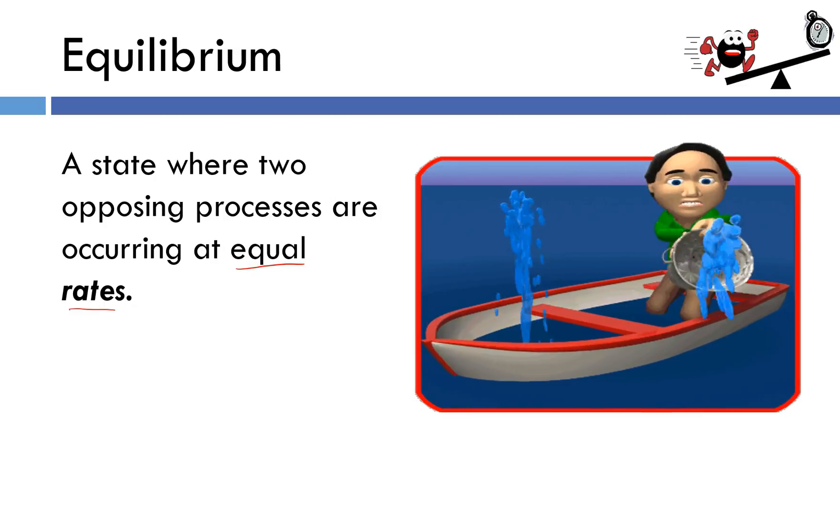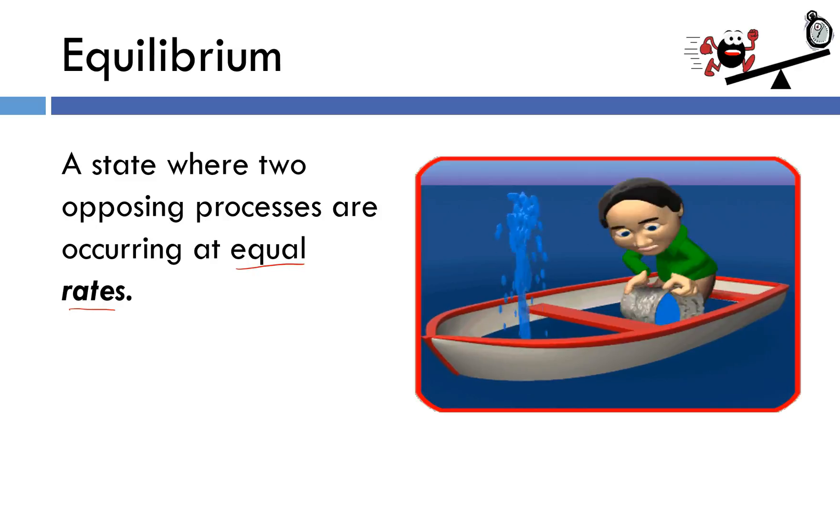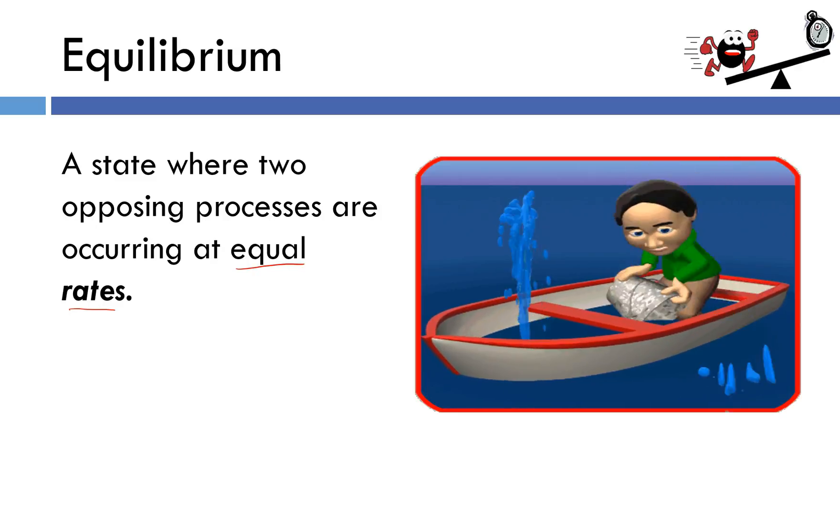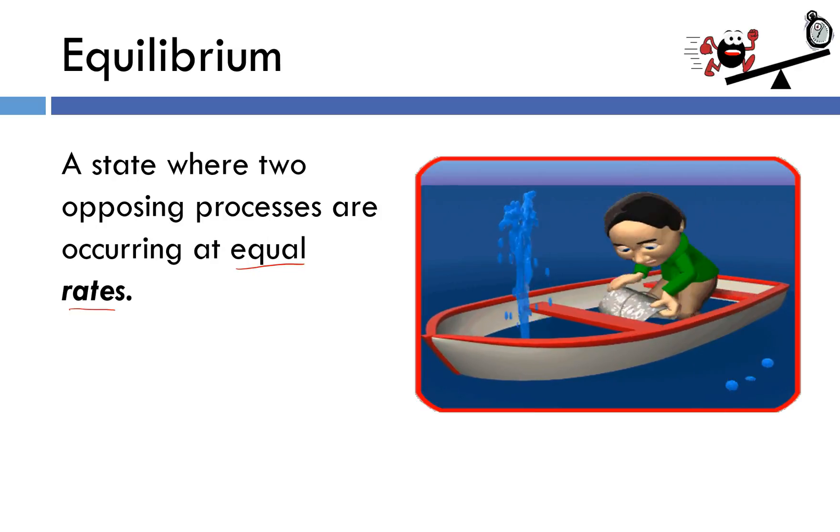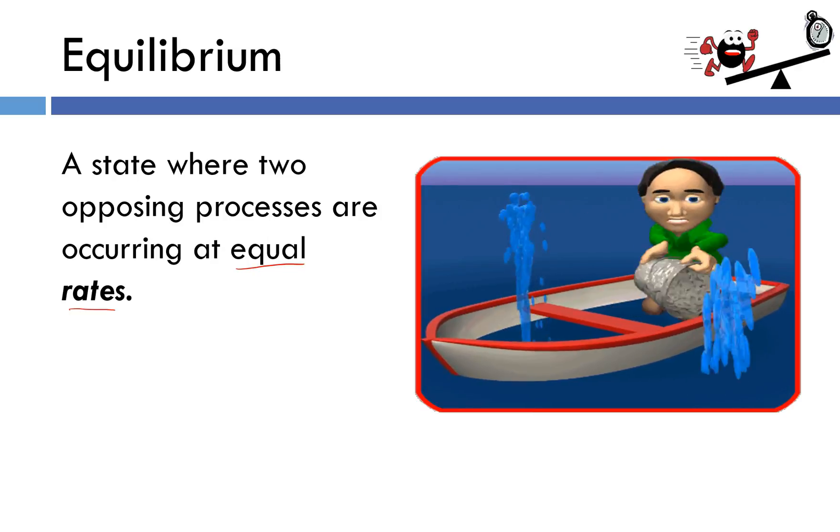If I look at the water level in the boat, that's going to tell me if we're at equal rates or not. If the water level is changing, for example, it's getting higher, it's safe to assume that the water coming into the boat is occurring at a faster rate than water is being thrown out of the boat.